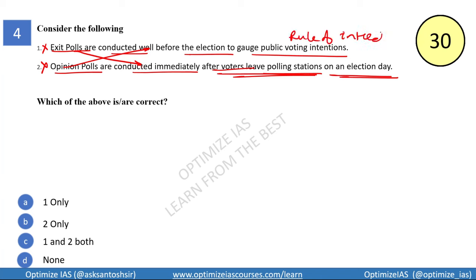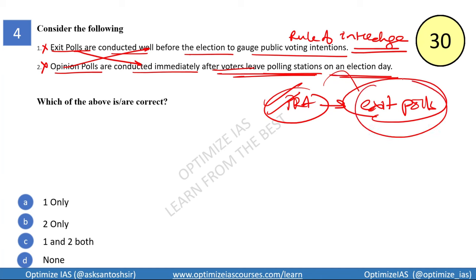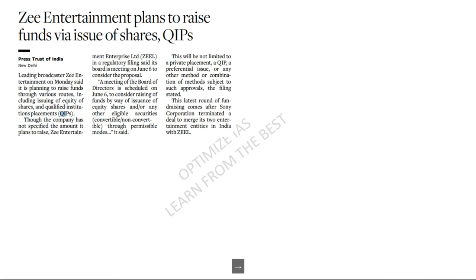This is called the rule of interchange, which UPSC commonly uses. The RPA Act — Representation of People Act — regulates exit polls. The result of an exit poll can only be declared 30 minutes after the last day of voting. So none of the statements are correct.